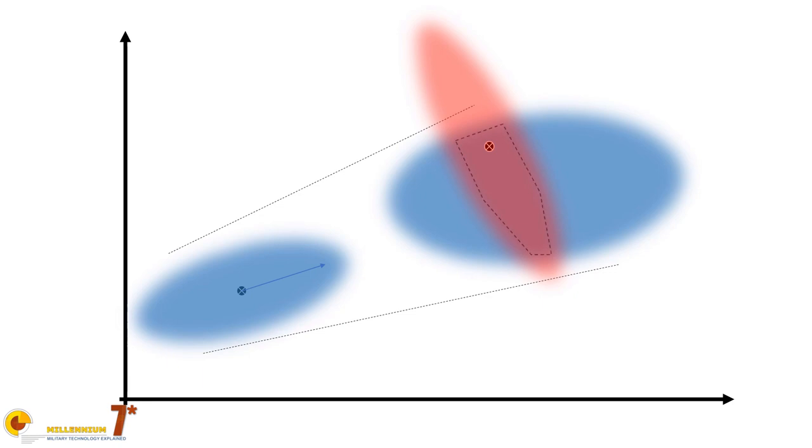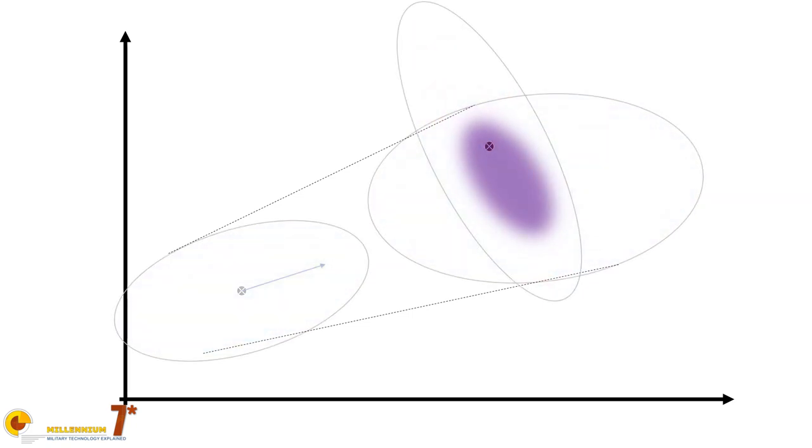Aha, now we have something. The intersection of the two blobs is a much smaller region. Since the two blobs represent two probability distributions, in the intersection there will be a point where the combined probability of the target being there is the highest, and that will be the most likely place where the target is going to be. This is going to be the position that we feed to the guidance electronics.